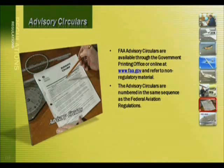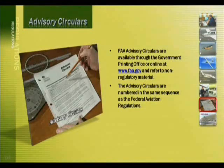The Advisory Circulars are numbered in the same sequence as the Federal Aviation Regulations and are categorized as follows: 60 is for Airman's Information, and 70 covers Airspace.